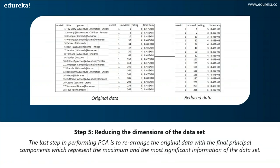The last step in performing PCA is to rearrange the original data with the final principal components which represent the maximum and most significant information of the data set. The original data set will be narrowed down to a reduced data set which contains only the most important information. This is the whole concept behind PCA — it's a dimensionality reduction technique that lets you get rid of redundant and highly correlated data so that you can easily perform computations on your data set, because the dimensions are much lesser.